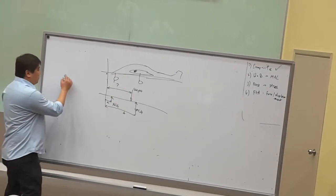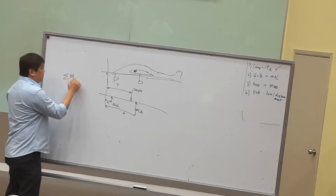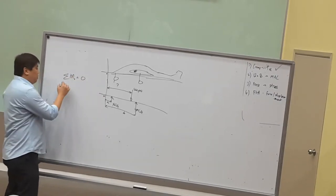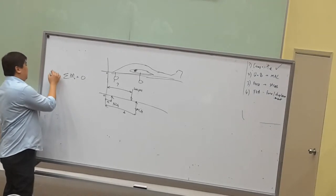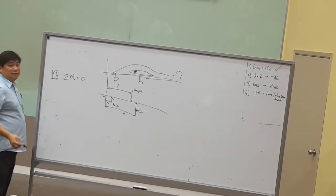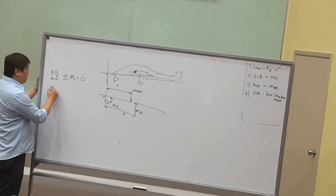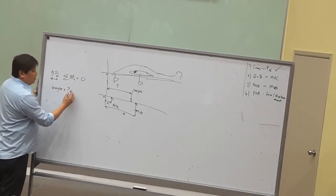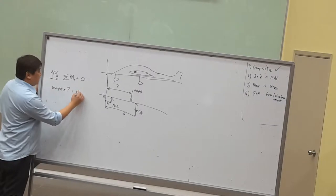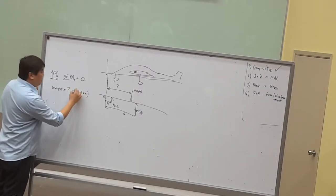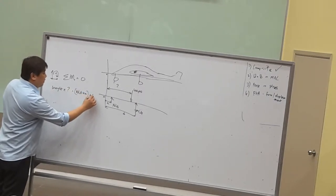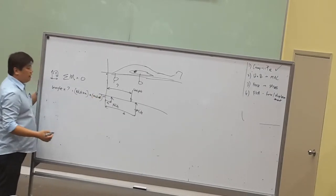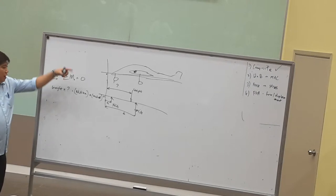So what we have to do is always summation of moments about O equals to zero. So maybe clockwise is a plus. So basically here weight times, don't know what, is equals to nose landing gear times A plus main landing gear times B. And whatever component up, the component going down, you just have to decide.